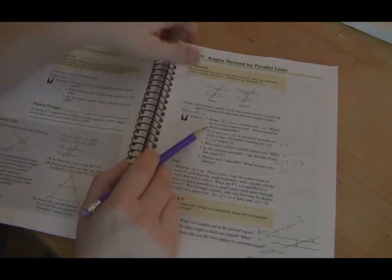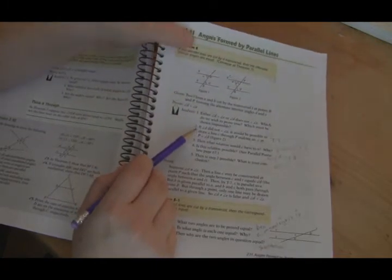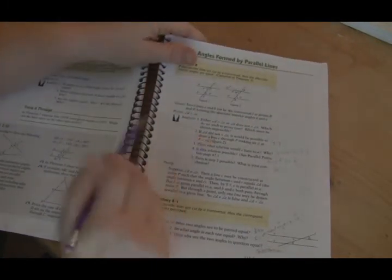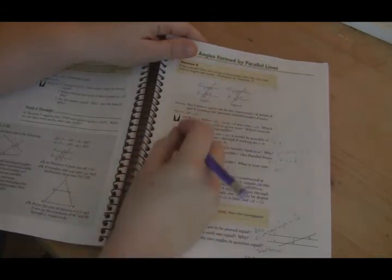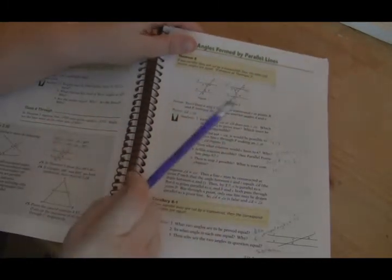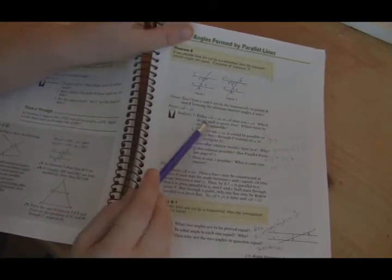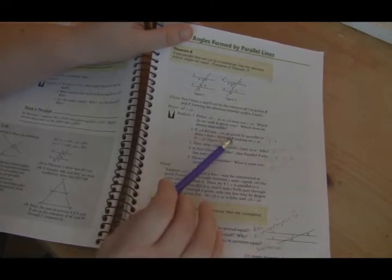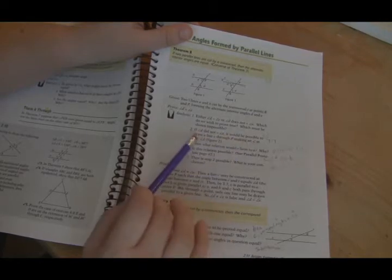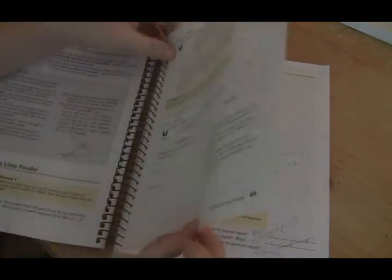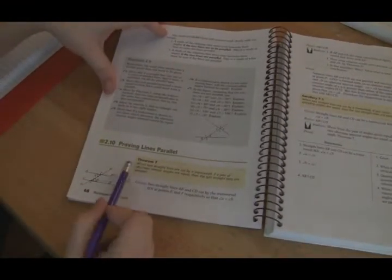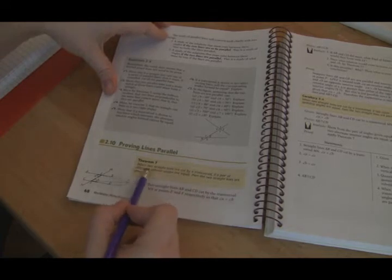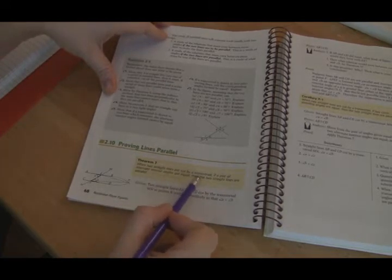Number two says that if D did not equal E, let's say we had some lines, and let me draw them, well, I'll draw them in just a second. If D did not equal to E, it would be possible to draw a line C through P, making an angle at P equal to D. So, let's look at Theorem 7. Theorem 7 was back on page 68. It says when two straight lines are cut by transversal, if a pair of interior angles are equal, then the two straight lines are parallel.